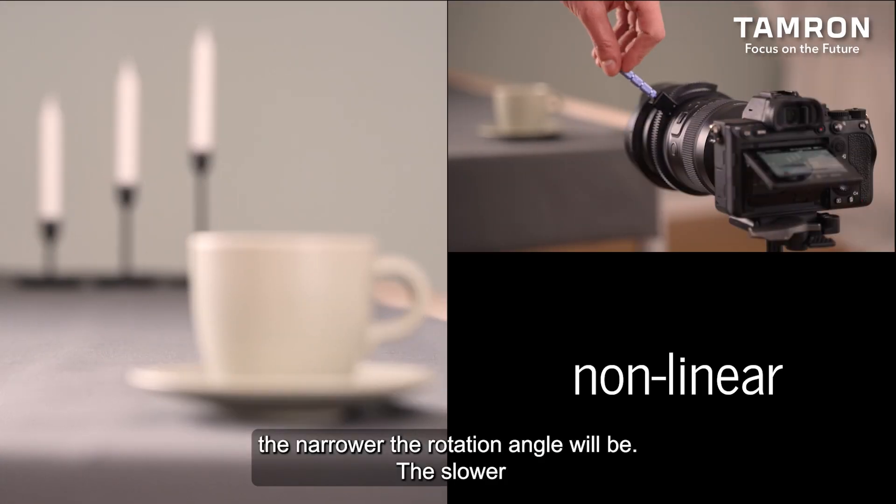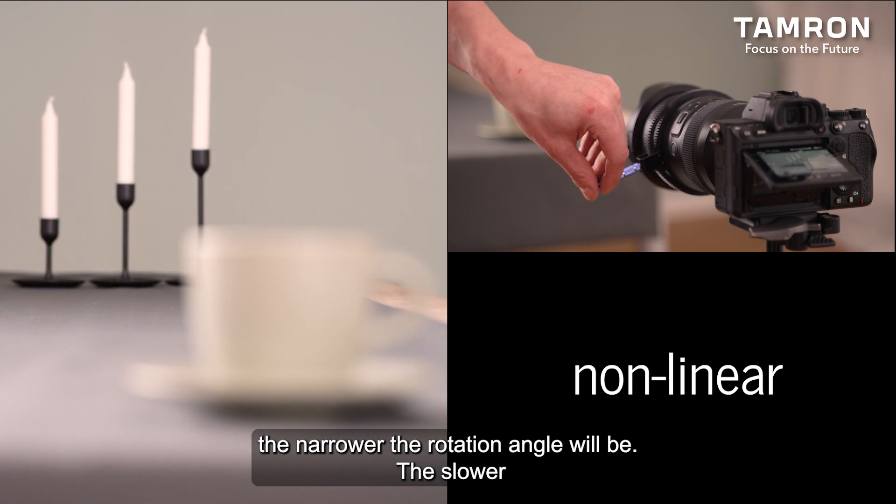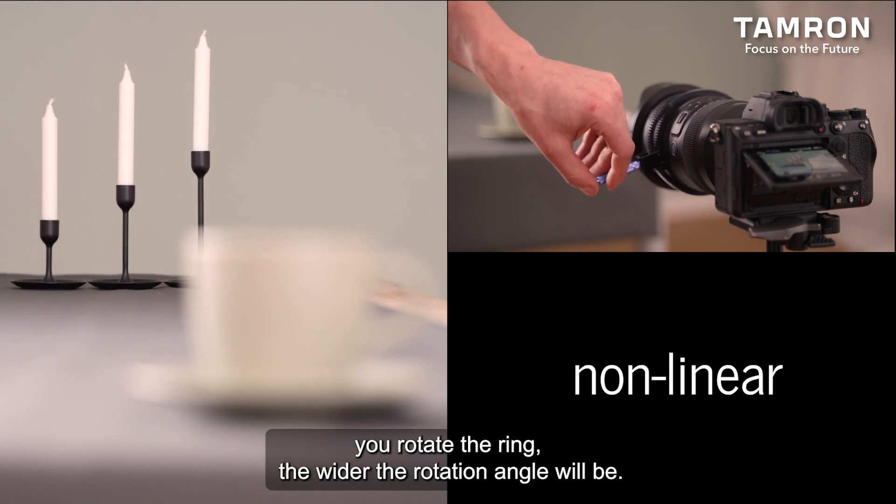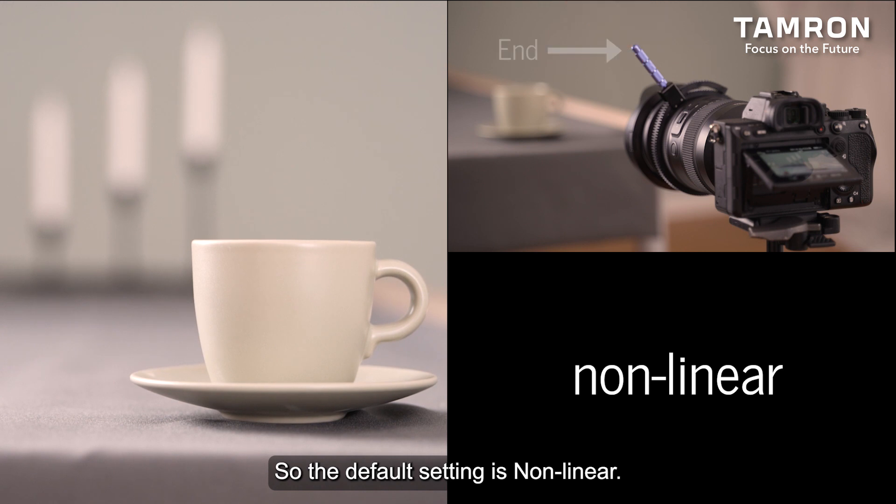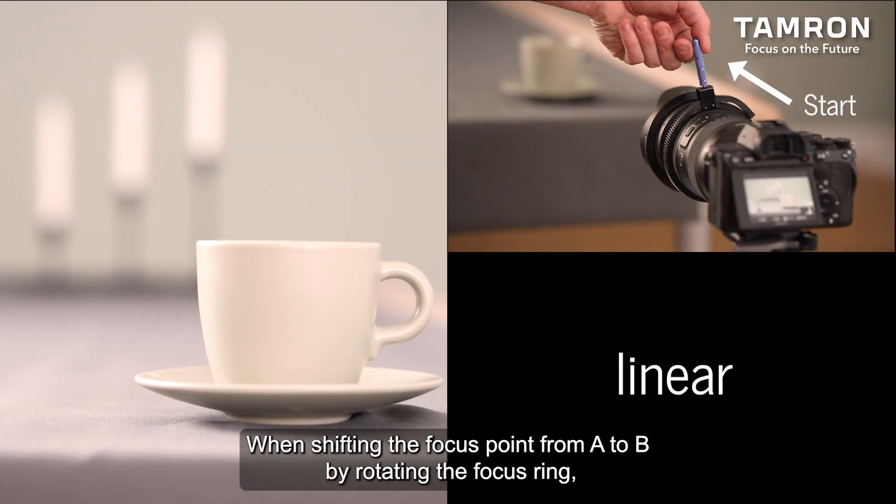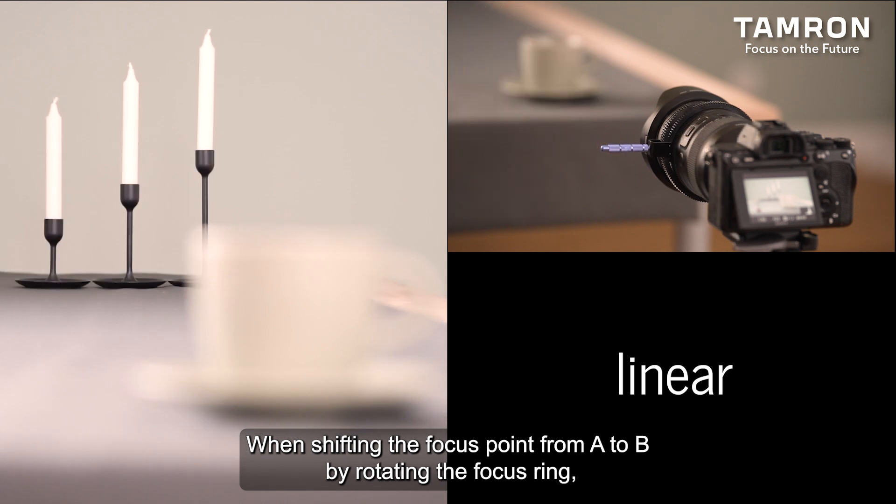The faster you rotate the ring, the narrower the rotation angle will be. The slower you rotate the ring, the wider the rotation angle will be. So the default setting is nonlinear.